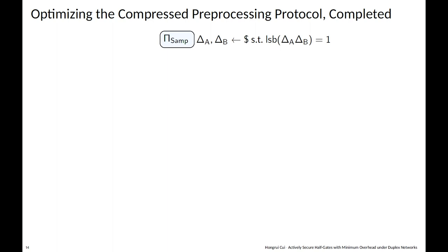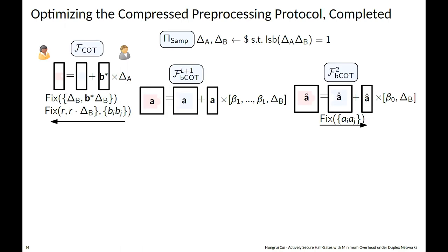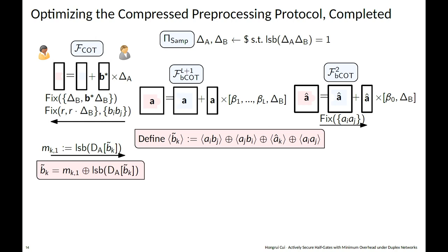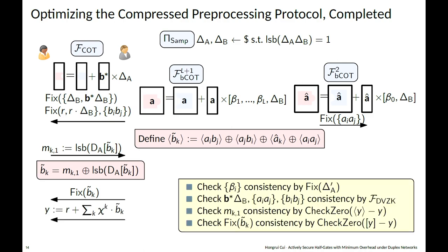Reusing the previous observation, we only need to compute a handful of terms. We begin by secret-sharing the red terms using the FIX command in the COT functionality. We rename the FIX command outputs as alpha and beta. Bob can then use the beta values as block-COT global keys to authenticate a and a-hat. Alice can locally patch her shares with a times alpha to get the dual key shares. We then check consistency between block-COT global keys and COT outputs, which can be done efficiently since COT outputs are implicitly authenticated by Δ_A inverse.